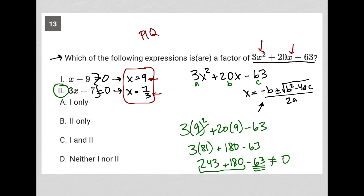Whereas 7 thirds, right, 3 times 7 thirds squared plus 20 times 7 thirds minus 63 becomes 3 times 49 ninths. 140 over 3 minus 63,